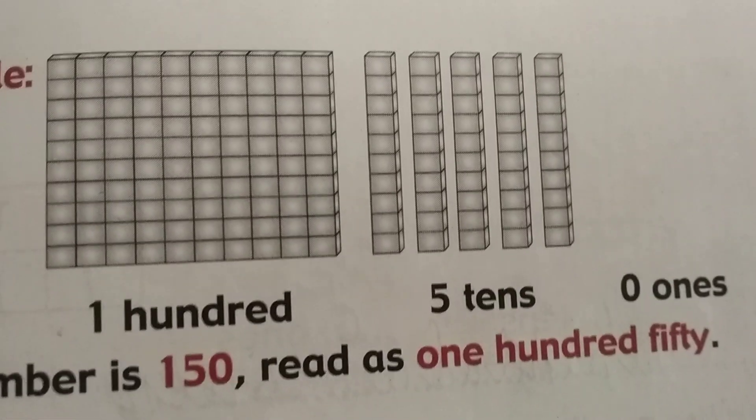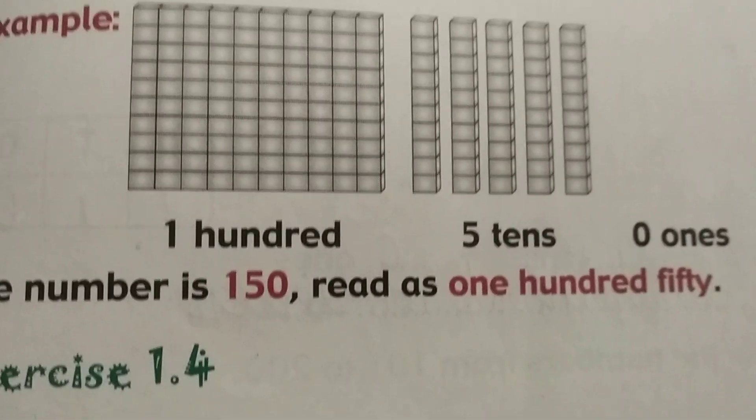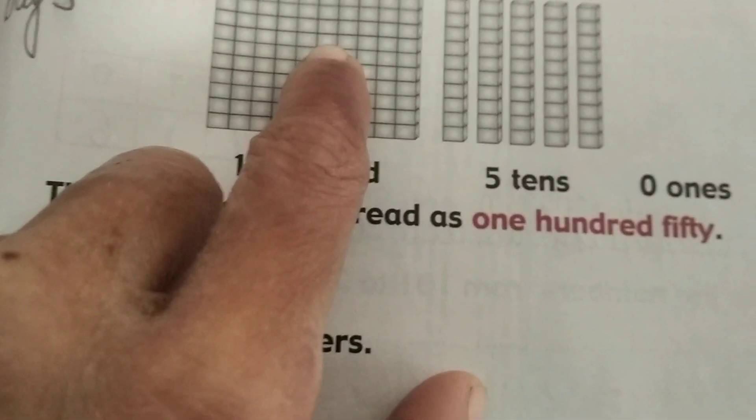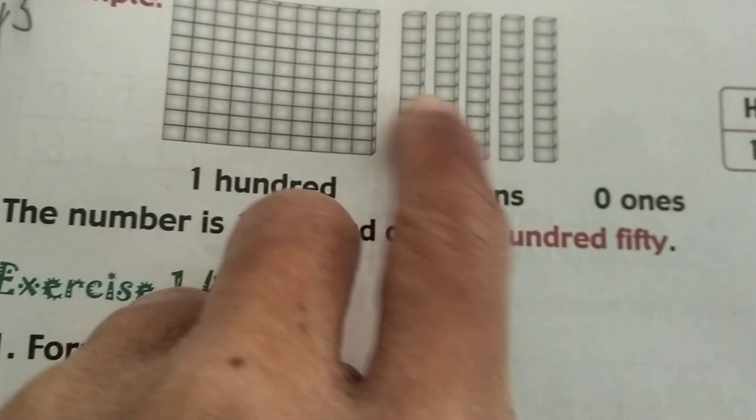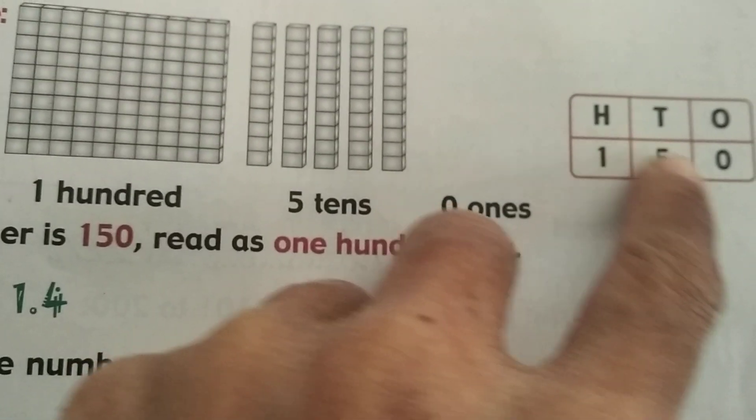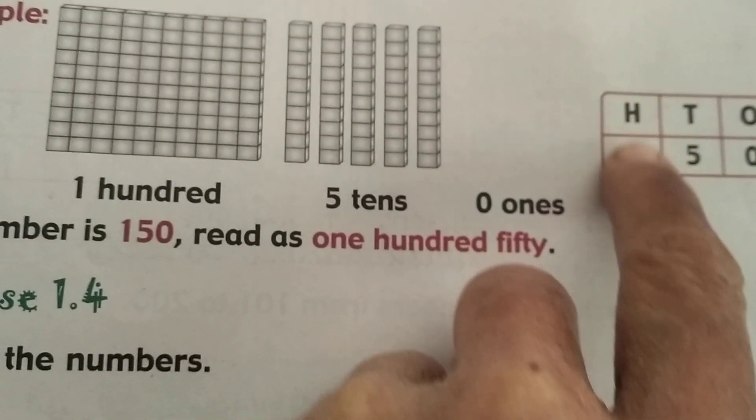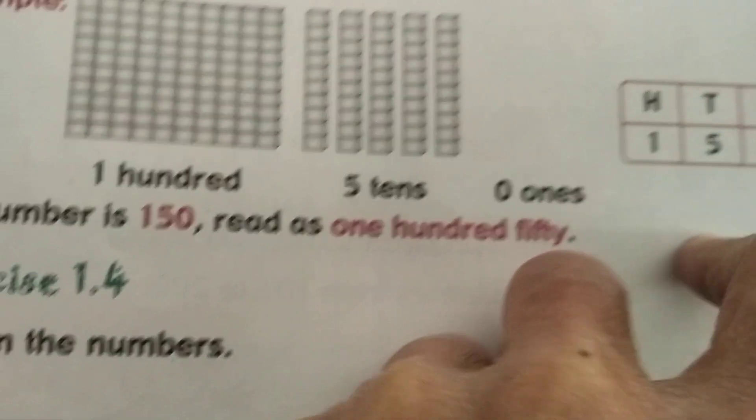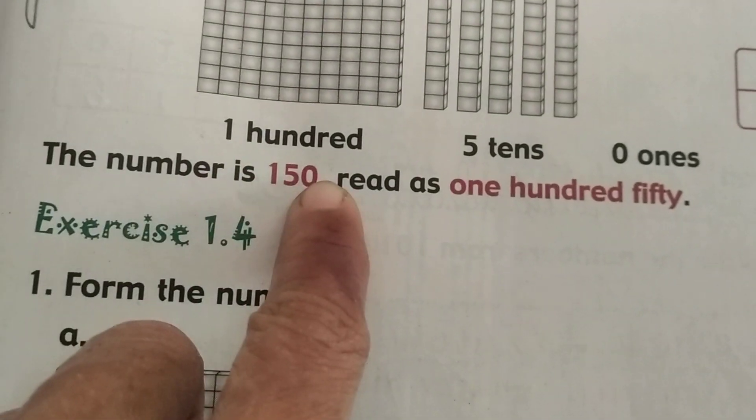Then let us go to the next number: 1 hundred, 5 tens—1, 2, 3, 4, 5—and 0 ones, 150. So the number is 150.